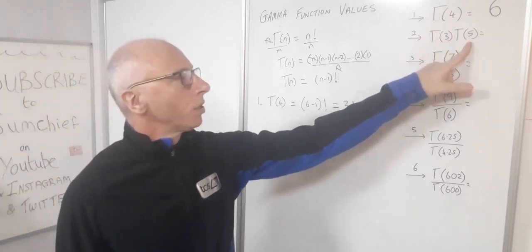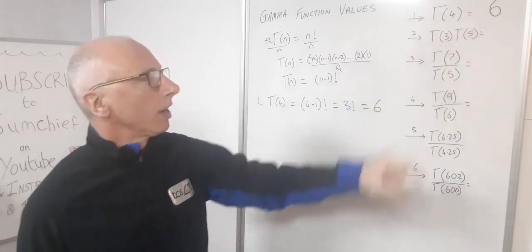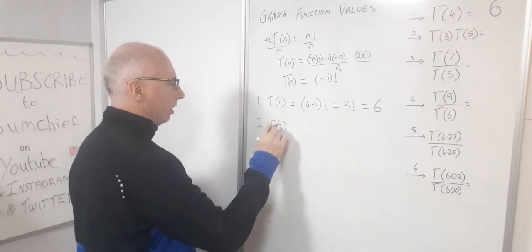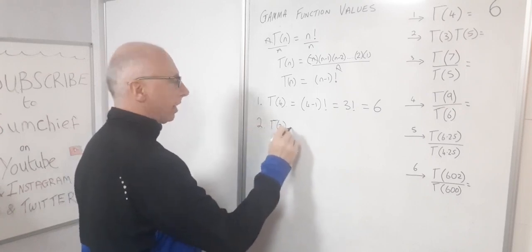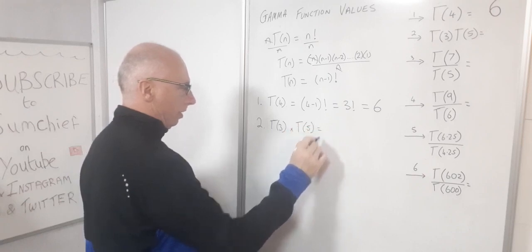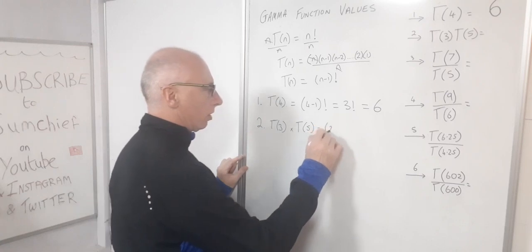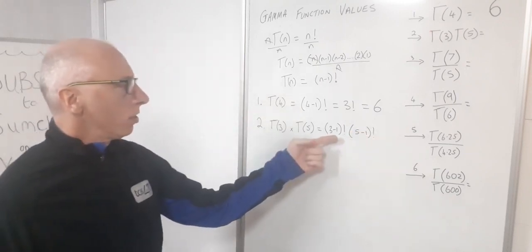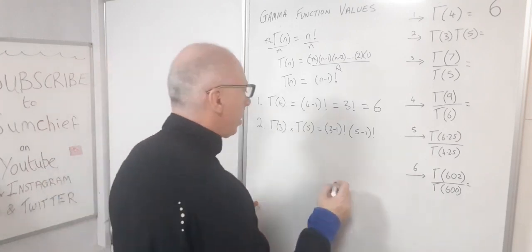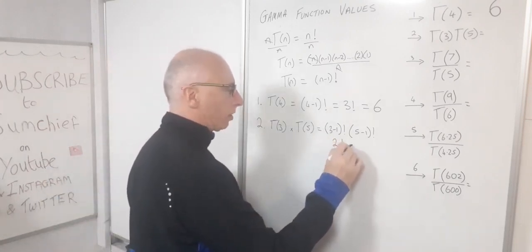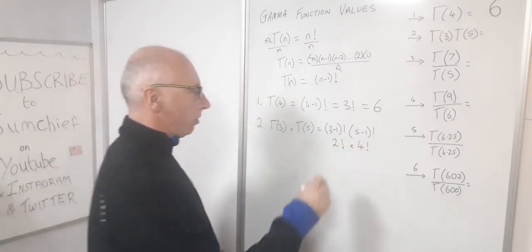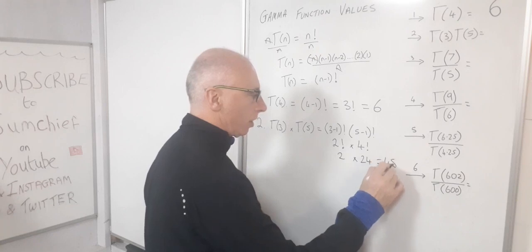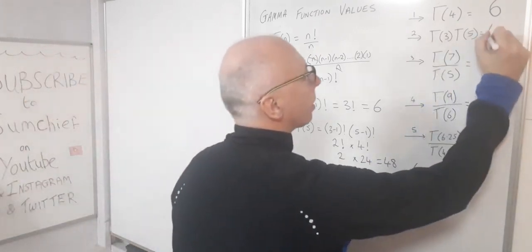Question 2 is going to involve some multiplication: gamma(3) times gamma(5). Gamma(3) equals (3-1) factorial and gamma(5) equals (5-1) factorial, which gives us 2 factorial times 4 factorial. Now, 2 factorial is 2, and 4 factorial is 1 times 2 times 3 times 4, which is 24. So that gives us 2 times 24 equals 48.